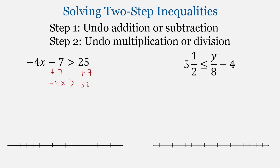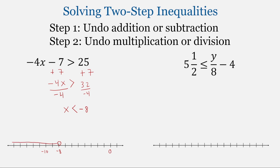Now we'll undo the multiplication — undo multiplication by division. So we're going to divide both sides by negative 4. We get x on the left. 32 divided by negative 4 is negative 8 on the right. We divided by a negative, so we will switch the direction of the inequality. To graph this, we'll put an open circle at negative 8 to show that negative 8 is not a solution to this inequality — it's less than, not less than or equal to. And then we'll shade everything to the left, which are values smaller than negative 8.